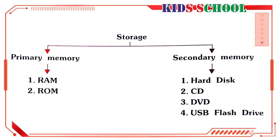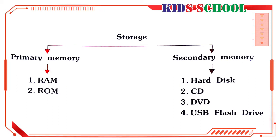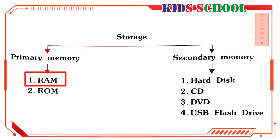Anything stored in RAM will remain stored only as long as electric power is supplied to the computer. If there is an interruption in the power supply, or if you accidentally switch off the computer, you will lose all the data stored in RAM. You cannot retrieve the lost data even if the power supply is restored or you switch on the computer again.